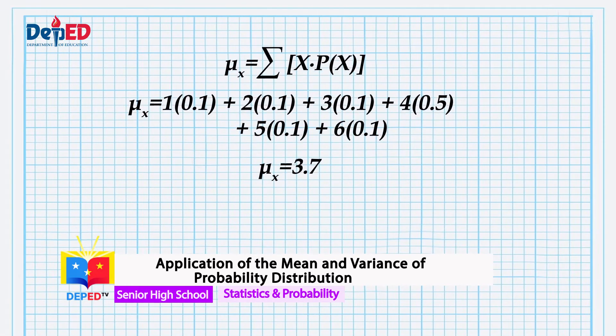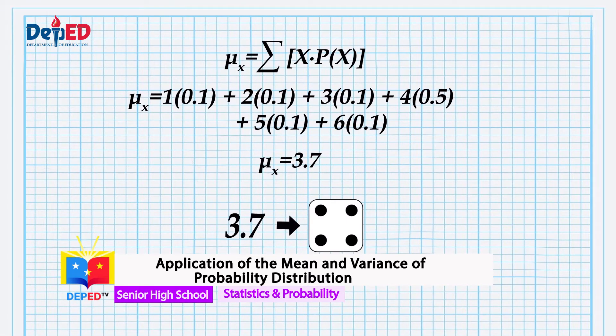Let's enter the values in our calculator: 1 times 0.1 plus 2 times 0.1 plus 3 times 0.1 plus 4 times 0.5 plus 5 times 0.1 plus 6 times 0.1. The result is 37 over 10, or 3.7. Based on the computation, the mean of the probability distribution is 3.7. We can say that the average number of dots that would appear is a number near to 3.7, which is 4. If we repeat the experiment over and over, there is a higher possibility that 4 dots will appear since the average number of dots is 3.7.